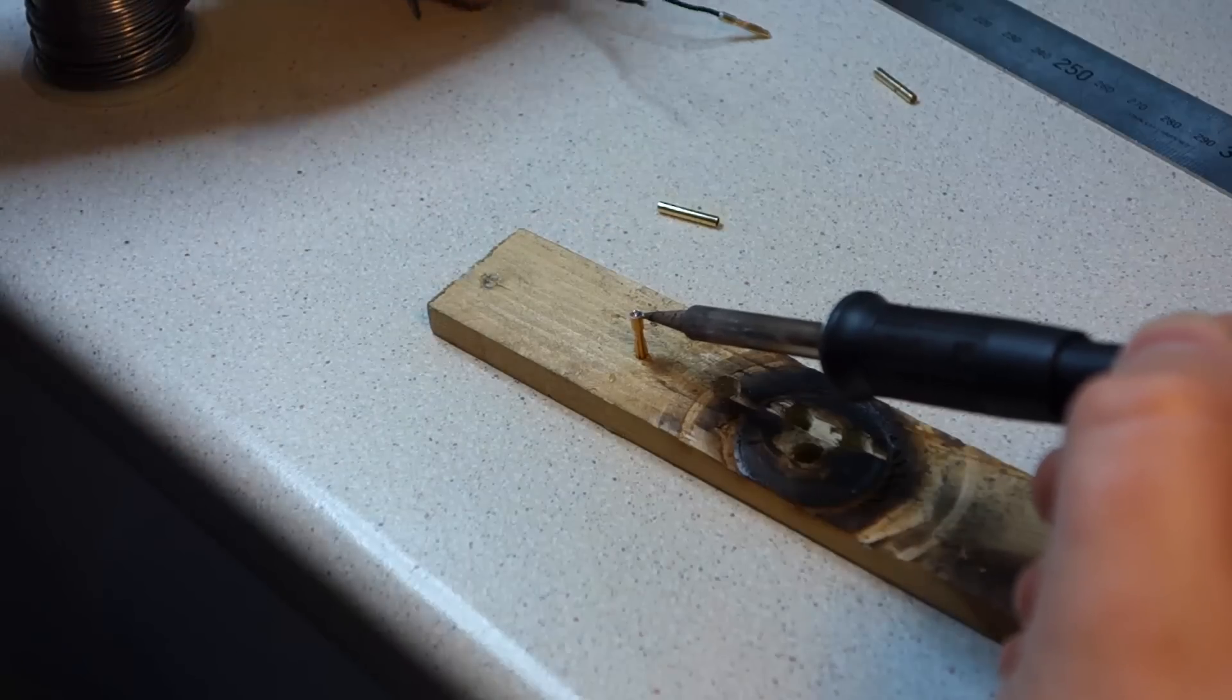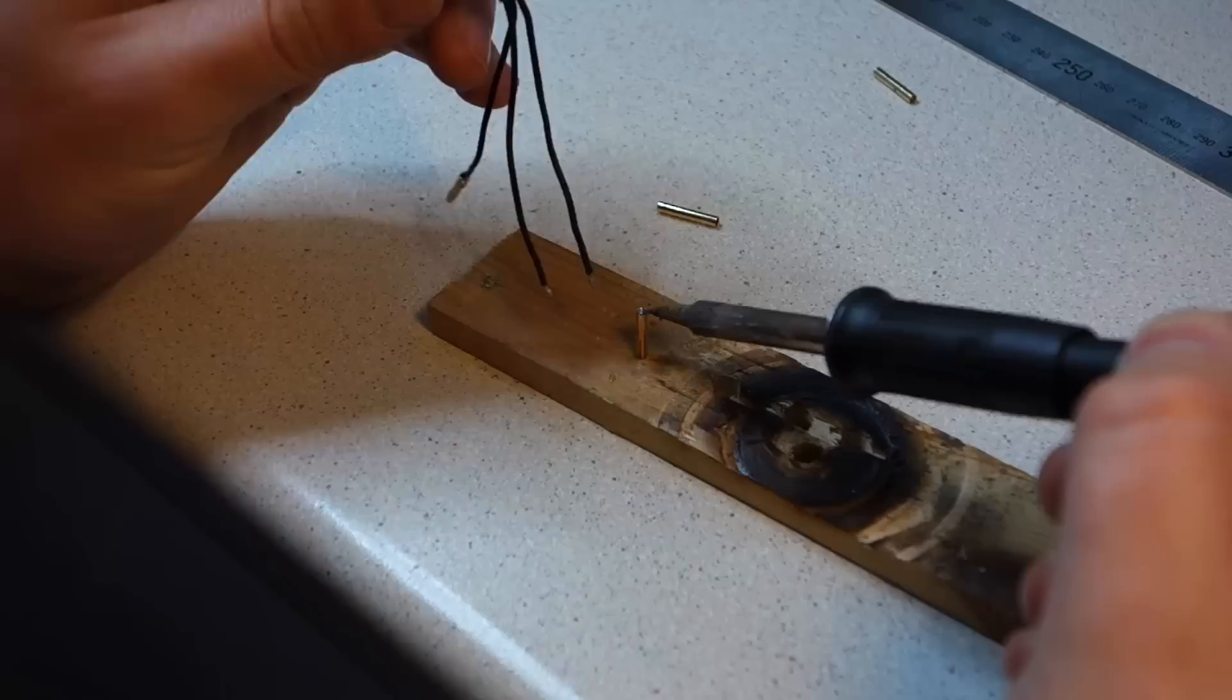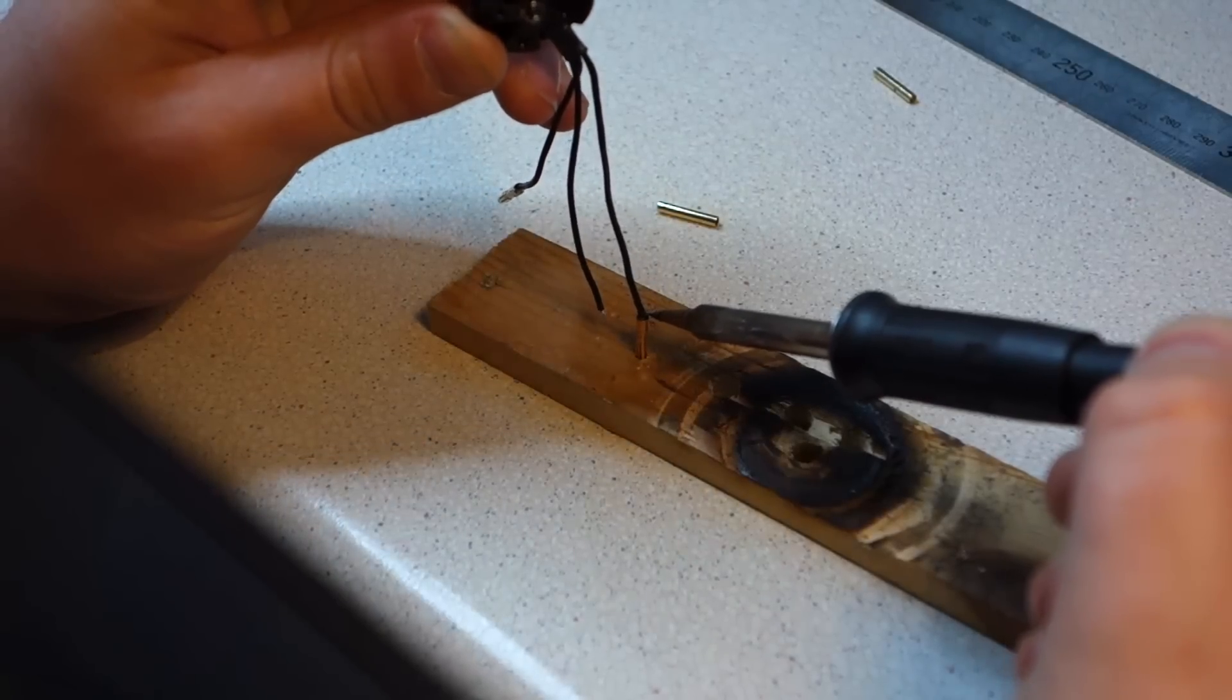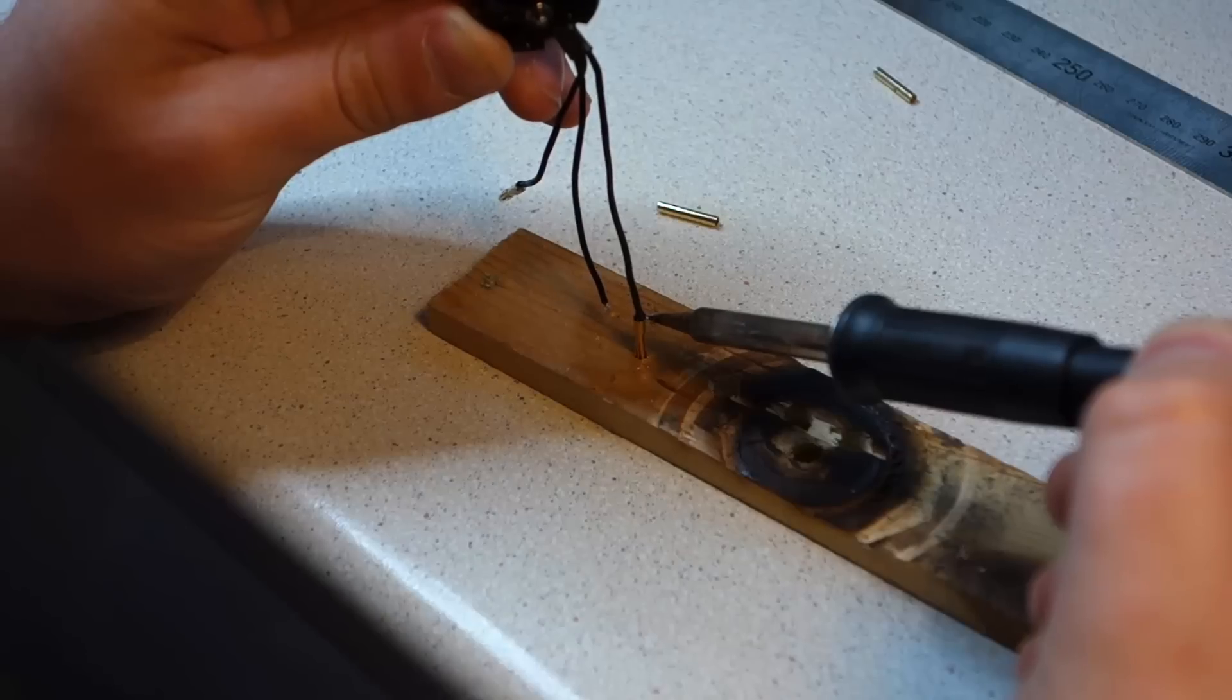Keeping the heat on the connector, take one of the bare wires from your motor and drop it into the molten solder. Now, these Emax motor wires come pre-tinned but if yours don't, then you should really tin them before doing this.